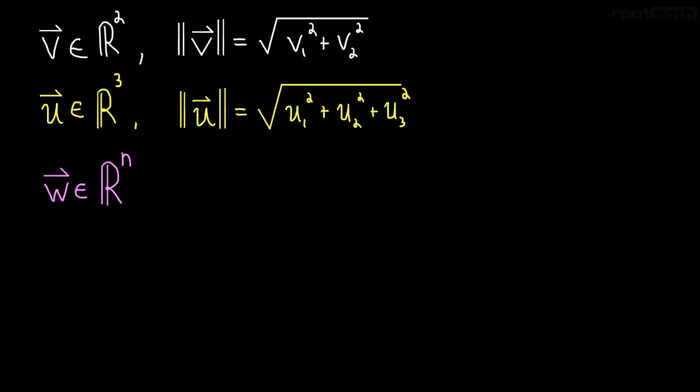Okay, so here we've seen the length of a vector with two components. In fact, we just used the Pythagorean theorem to figure out this length as just the square root of the first component squared plus the second component squared.